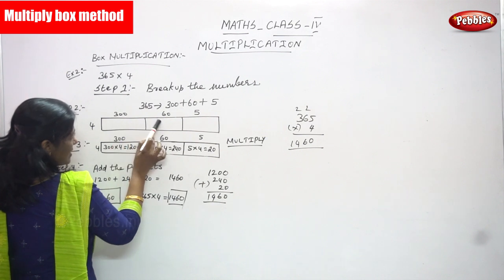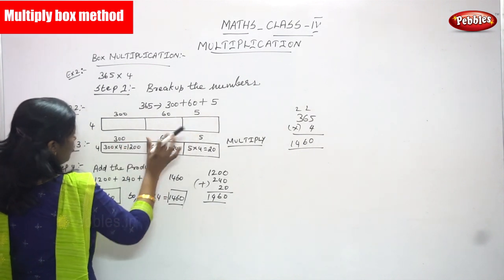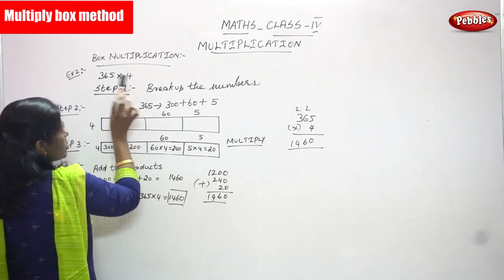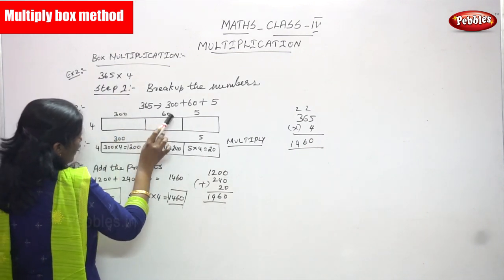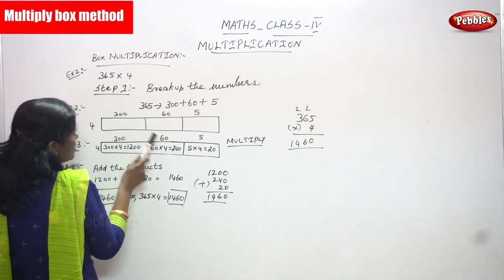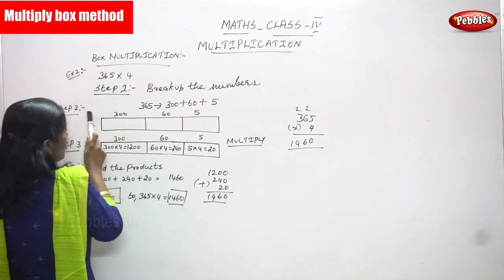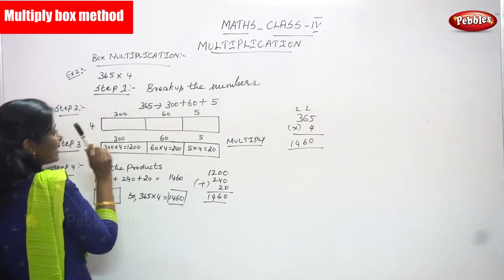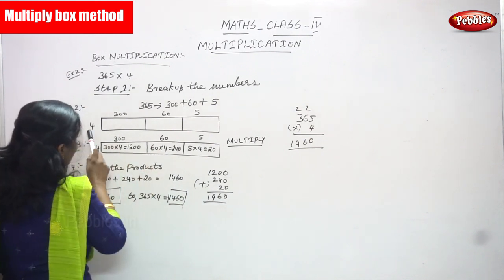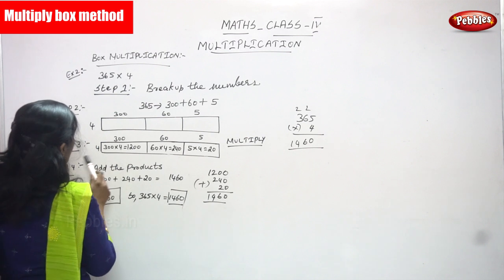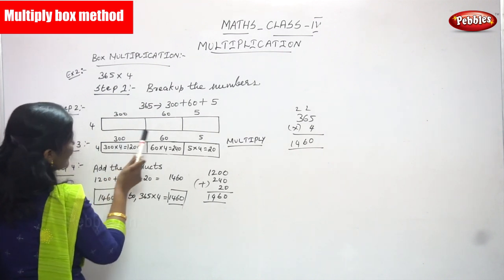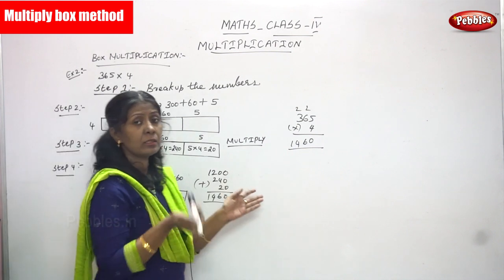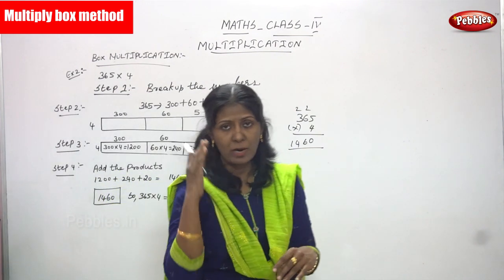Step two: you have to write everything in the box. Arrange 300, 60, and 5 in separate boxes. In each box you have to multiply by the number 4, since 365 is going to be multiplied by 4. So I've written 4 on each box.